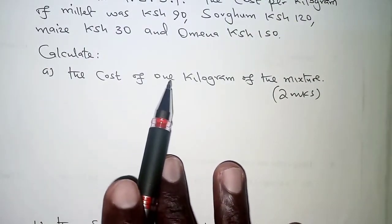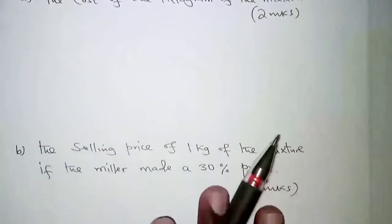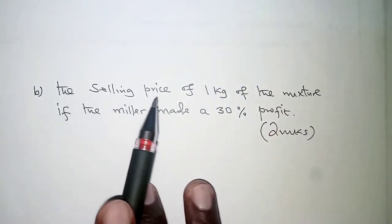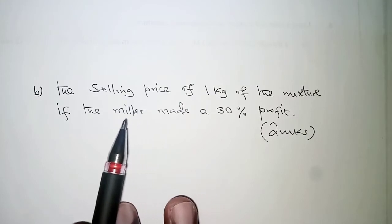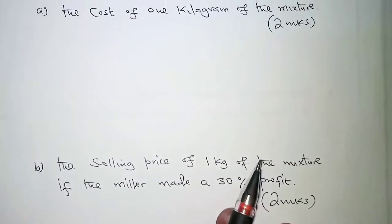Then calculate: (a) the cost of 1 kilogram of the mixture, and then (b) the selling price of 1 kilogram of the mixture if the miller made a 30% profit.